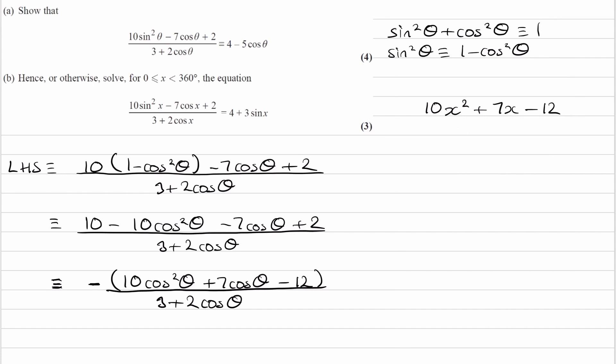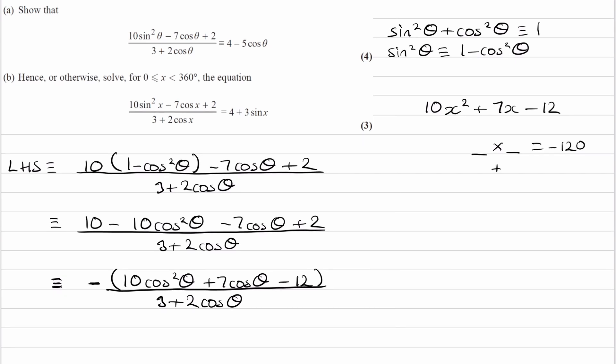We need to factorize this. So we're looking for two numbers that multiply together to give minus 12 times 10, which is minus 120, and add together to give 7. And those would be 15 and minus 8. So then we can rewrite this quadratic as 10x squared plus 15x minus 8x minus 12.